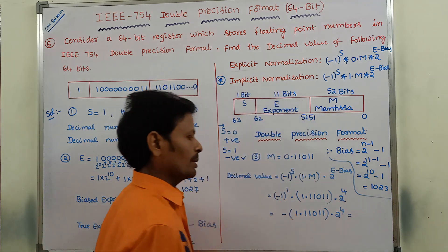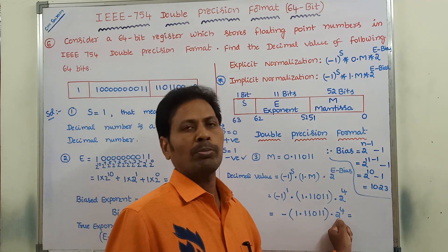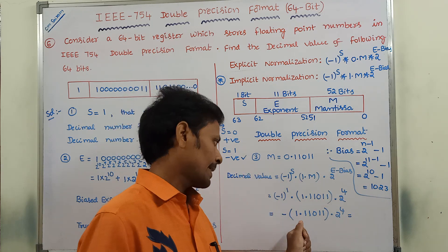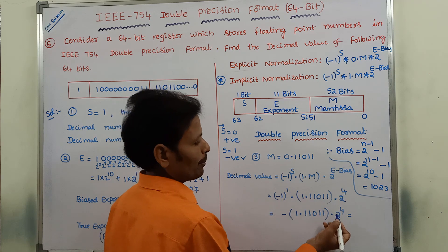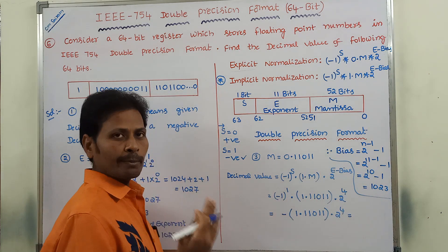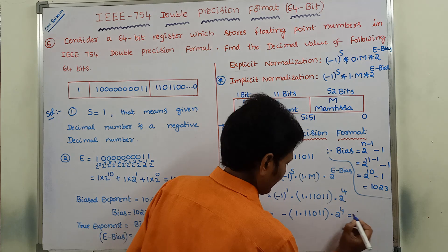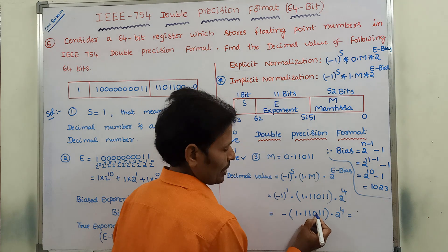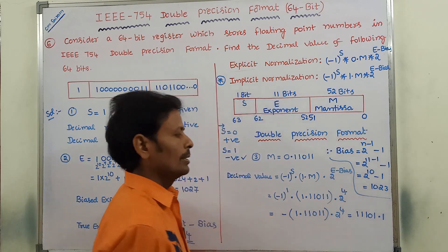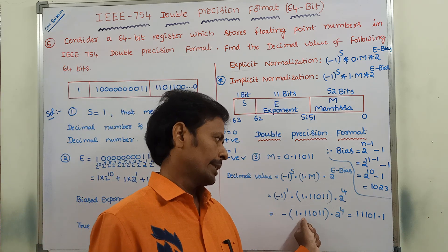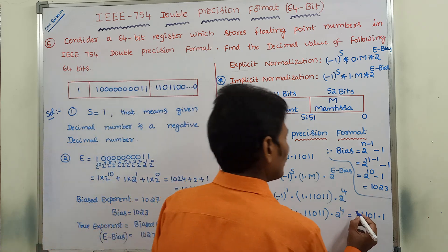When we multiply this number by 2^4, we have to move the decimal point 4 places to the right. After moving the decimal point 4 places to the right, we get: -11101.1. This is a negative value.